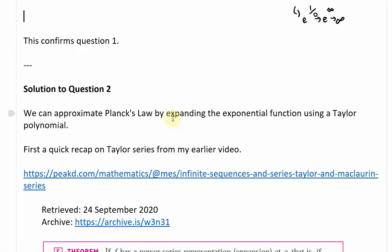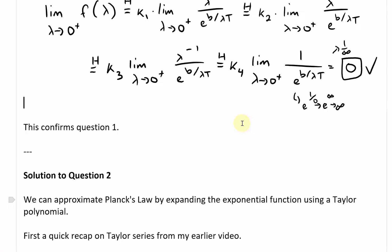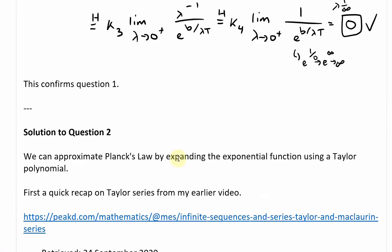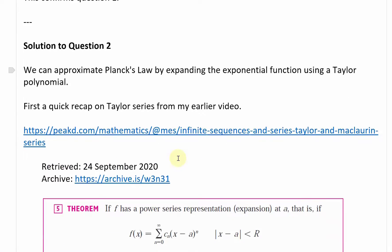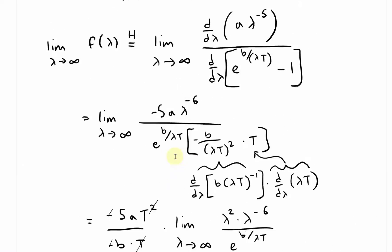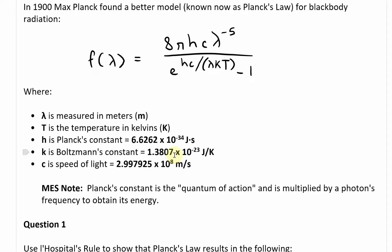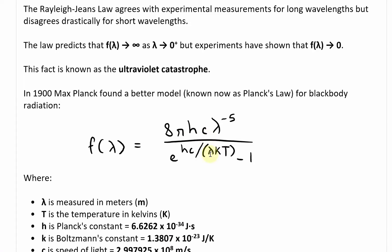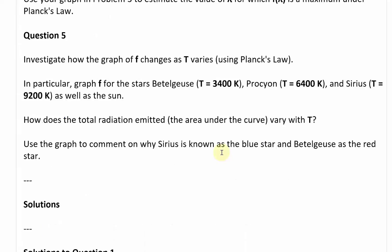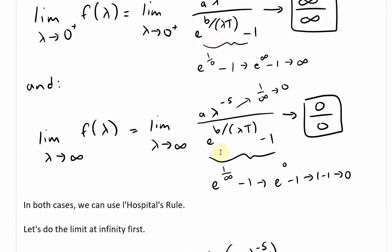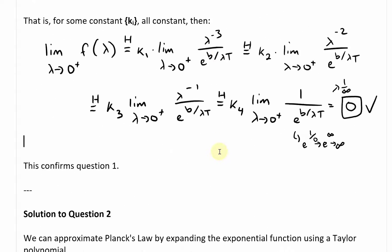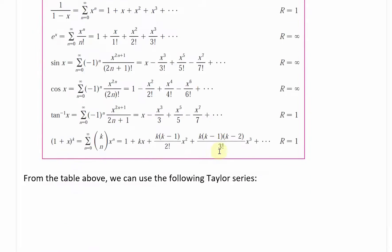We're asked to use Taylor polynomials. We can approximate Planck's law by expanding the exponential function using a Taylor polynomial. The complicated part of the function is e to the hc divided by lambda kT. We can replace this complicated function with a Taylor polynomial, which is just basic algebra but in infinite series form.